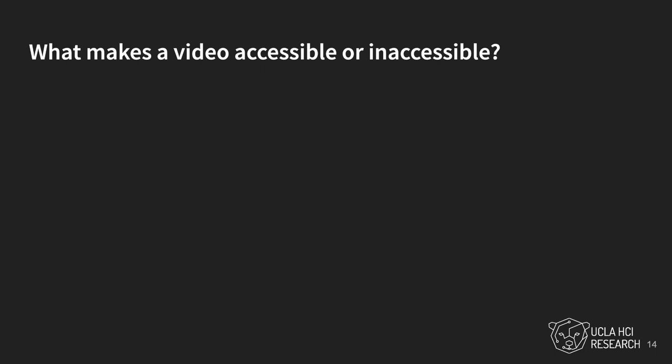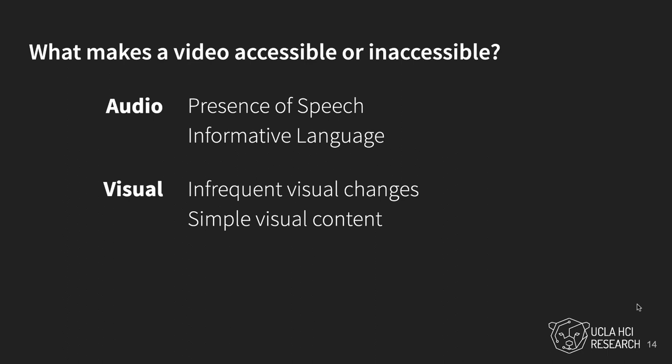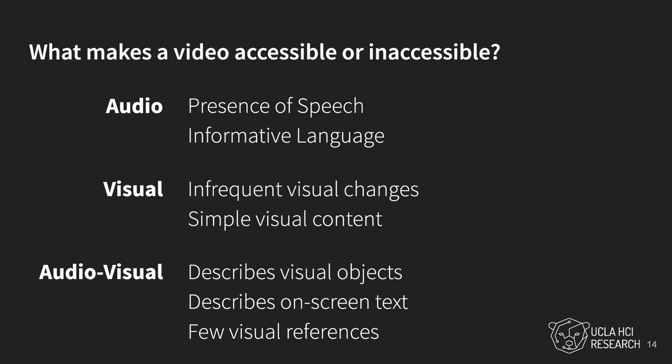Interview participants reported that they evaluated videos as accessible or inaccessible based on properties of the original video, including audio features such as presence of speech and informative language, visual features such as infrequent visual changes and simple visual content, and audio-visual features such as the description of visual objects, description of on-screen text, and few visual references.